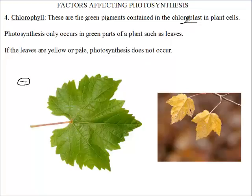This organelle contains the green pigment called chlorophyll. Remember, an organelle is a small structure in the cell that plays a specific role. The green pigment is chlorophyll, and the organelle that contains the chlorophyll is the chloroplast.